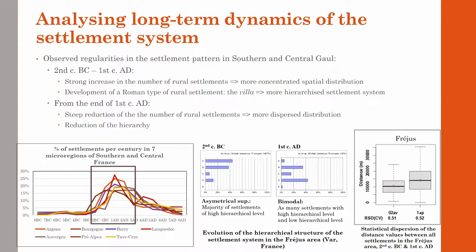Secondly, in most areas a steep reduction in the number of settlements starts at the end of the first century AD and continues during the second century AD, resulting in a more dispersed spatial distribution while the hierarchical diversity of the settlements decreases.